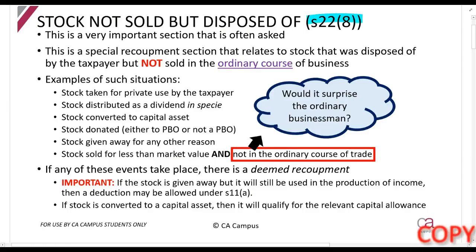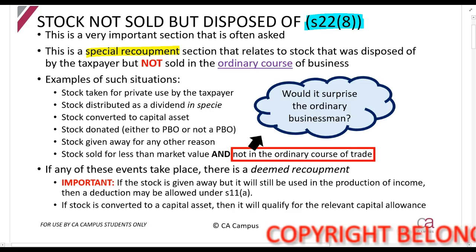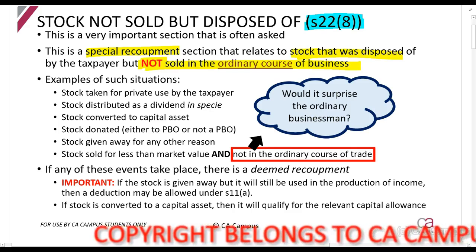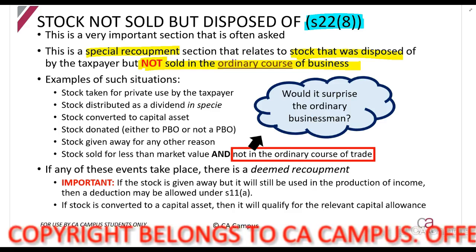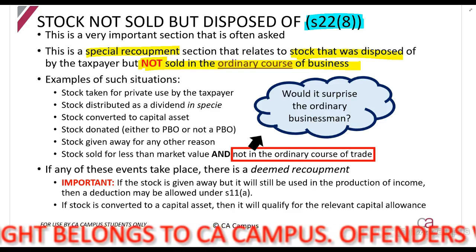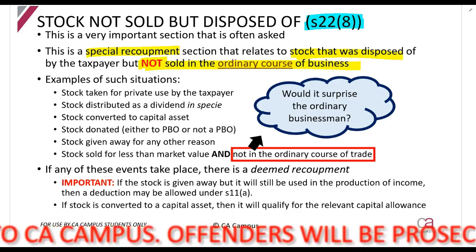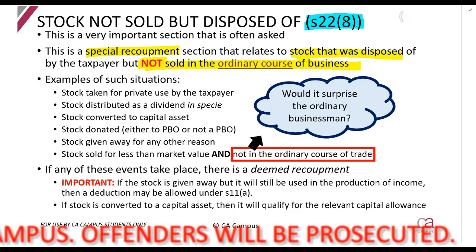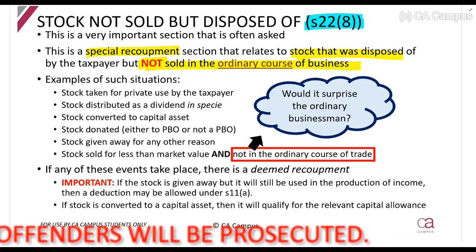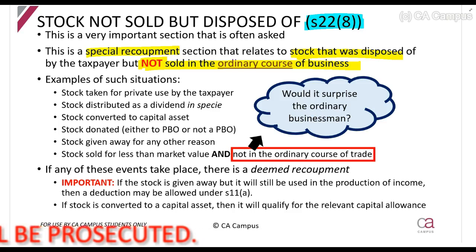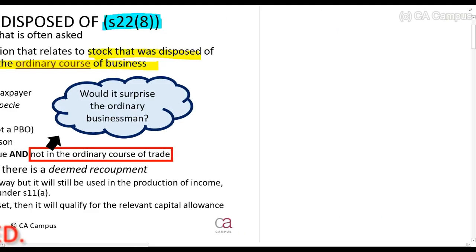Section 22(8) is an important section that deals with a special recoupment when you get rid of trading stock but not in the ordinary course of business. The idea behind trading stock is that you buy it or make it and then sell it. But what happens if you don't sell it — for example, if you give it to a shareholder as a dividend in specie, donate it to a school, or start using it as an asset instead? In all of those situations, you have trading stock and then you get rid of it as trading stock, either because you've given it away or because you're using it as an asset.